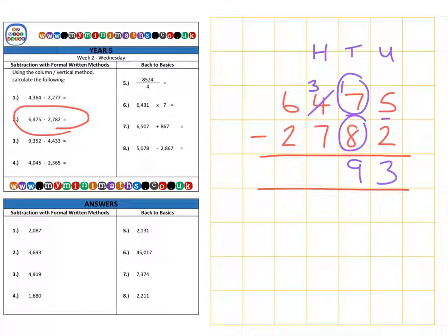And then, looking at the hundreds, we have 300 subtract 700, which we can't do. So we need to borrow again from the thousands column. So we're going to borrow from one of the six thousands. So it's now 5,000 and bring it over to the hundreds column. So we have 13 hundreds. Subtract the 700 to give us 600. And then finally, 5,000 subtract 2,000 to give us 3,000 for a final answer of 3,693.